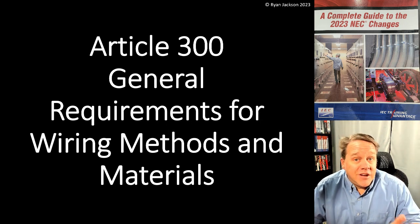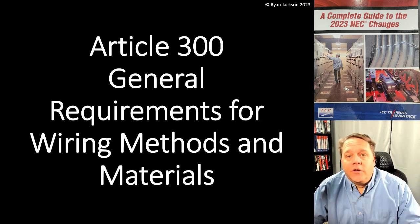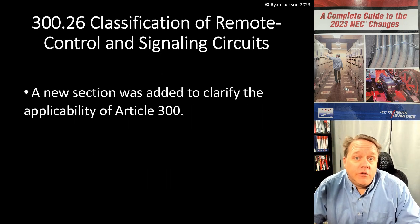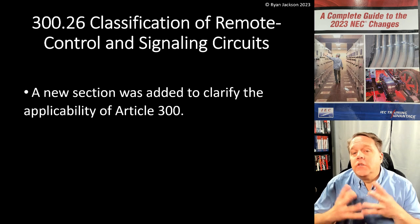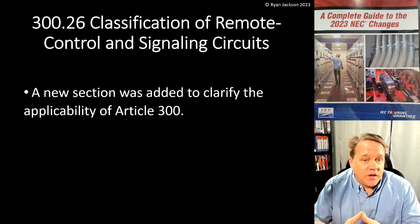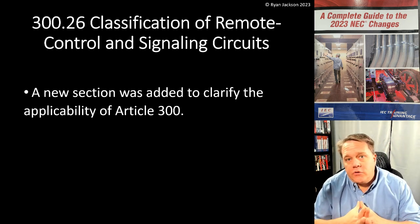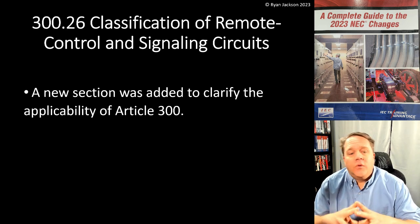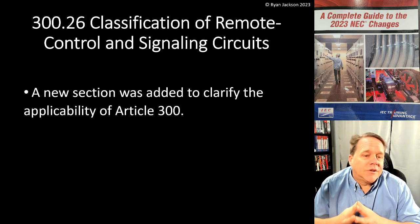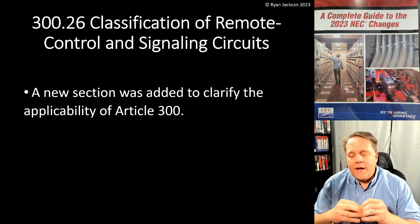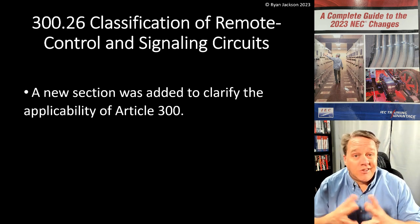Finishing up Article 300, general requirements for wiring methods and materials. We have a new section, 300.26, classification of remote control and signaling circuits, that was added to help clarify the applicability of Article 300.